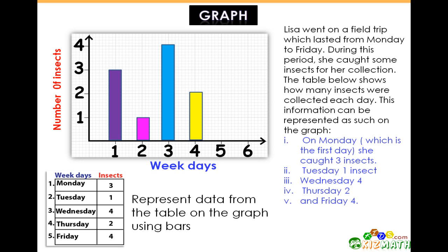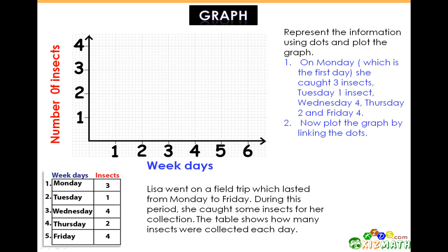On Friday or day five, she caught four insects. Here we'll use the same information again, but instead we'll use dots and plot them on the graph.